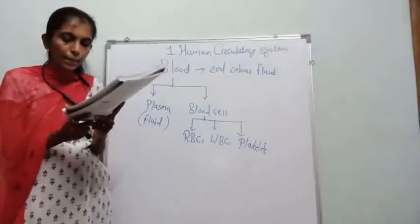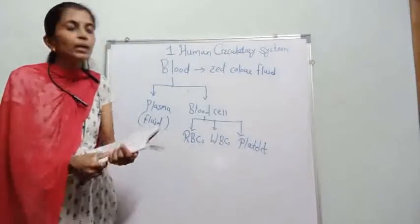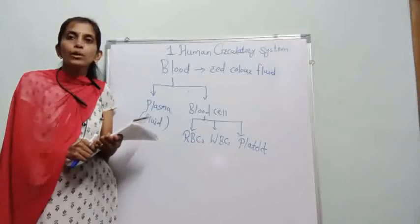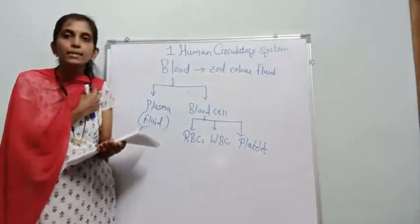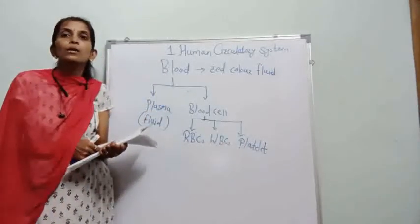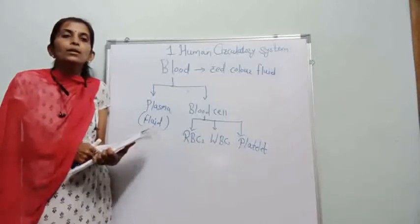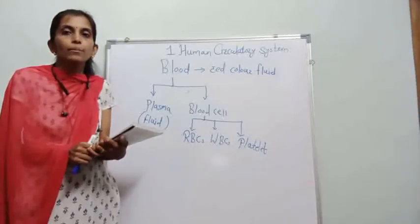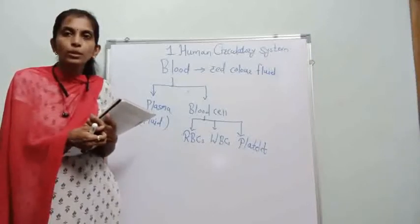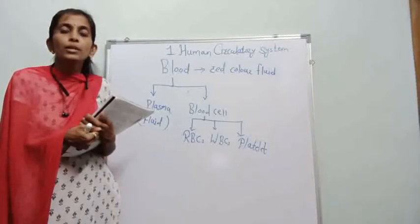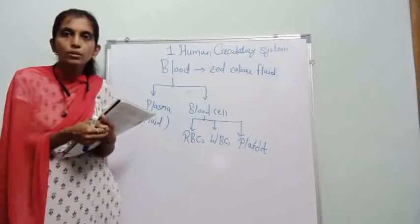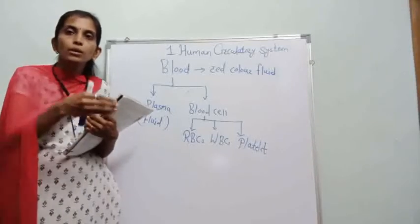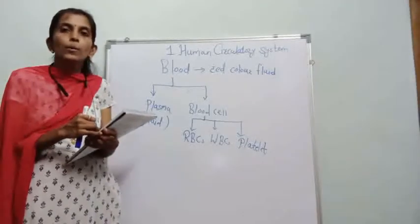The third type are platelets. They help in the clotting of blood. As I mentioned earlier, the circulatory system is helpful in the clotting of blood, and platelets present in our blood are responsible for this. Due to clotting, we can prevent the loss of blood from the body. For example, sugar patients — if they have any injuries, the blood does not clot quickly and their injury takes a long time to heal. So platelets are very important for blood clotting.